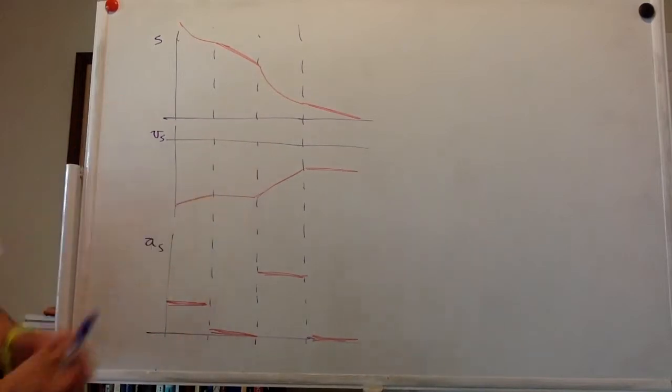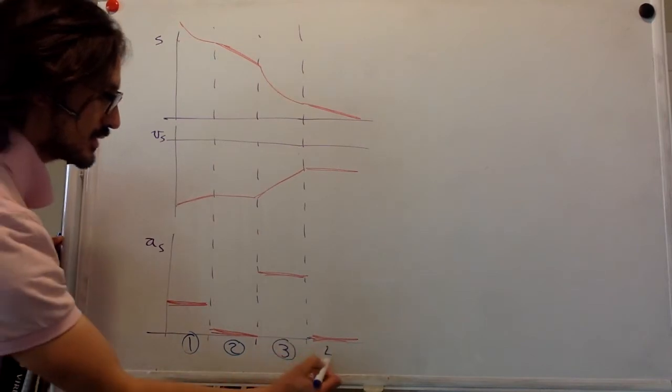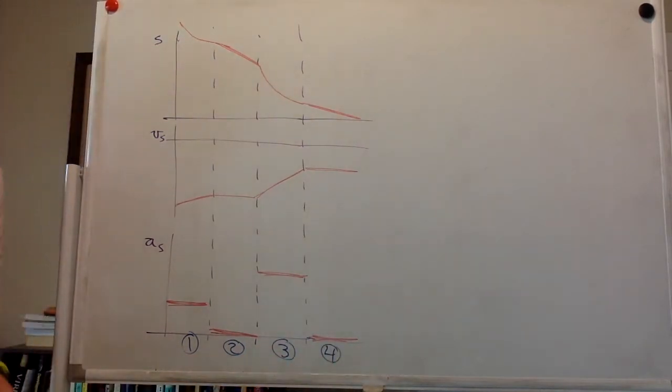The figure here shows a set of kinematic graphs for a ball rolling on a track. All segments of the track are straight lines, but some might be tilted. Draw a picture of the track and also indicate the ball's initial condition.